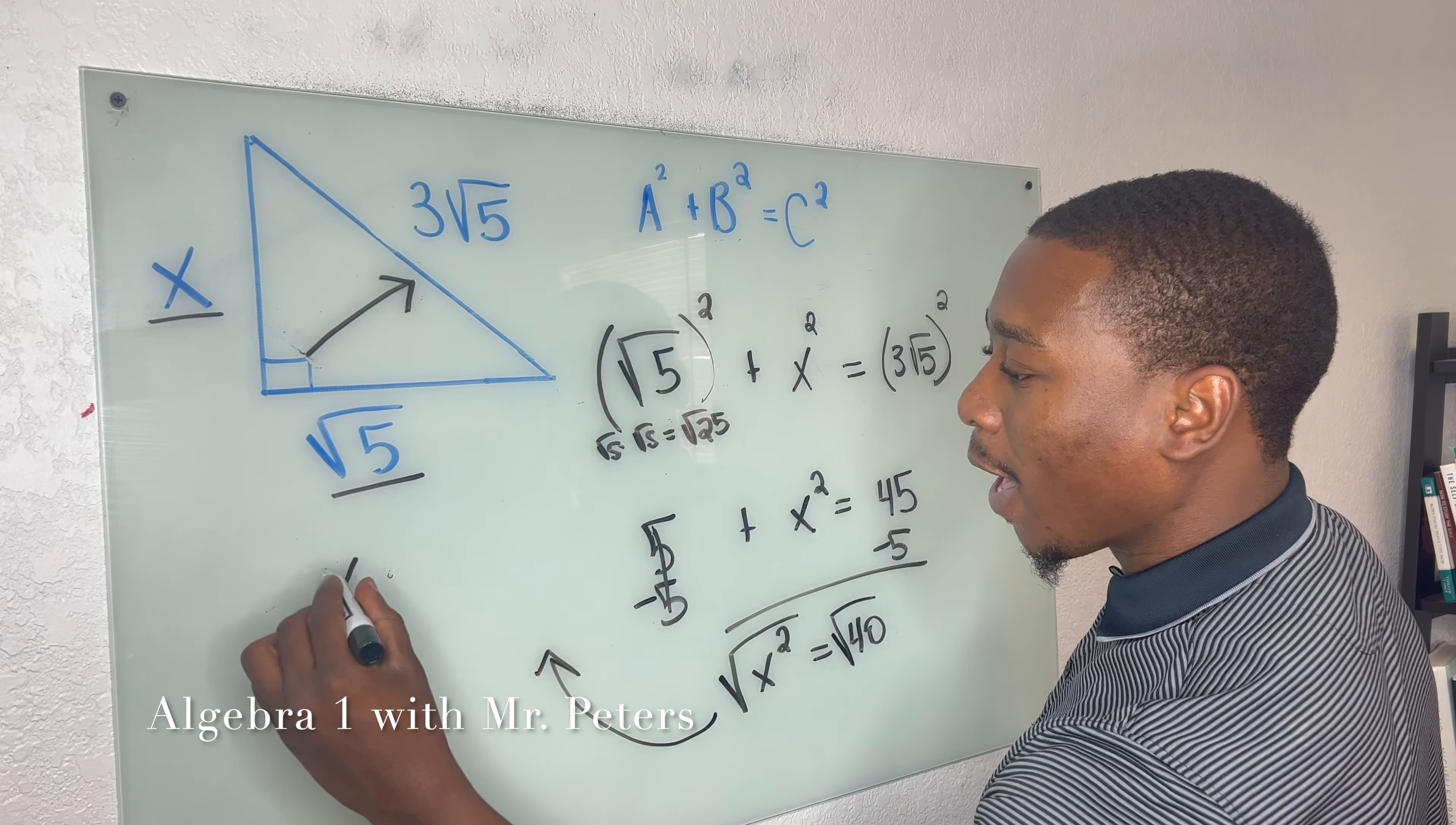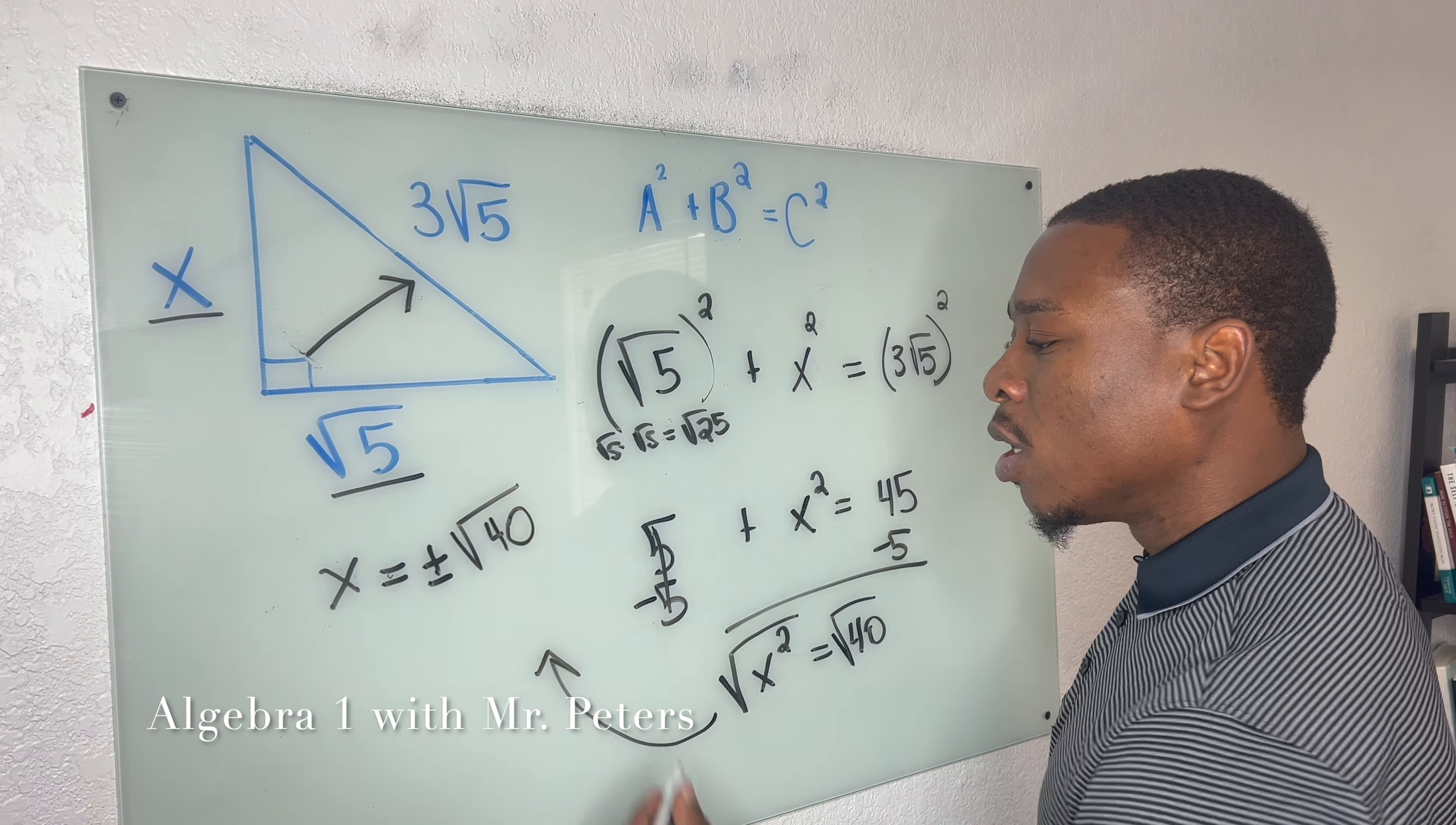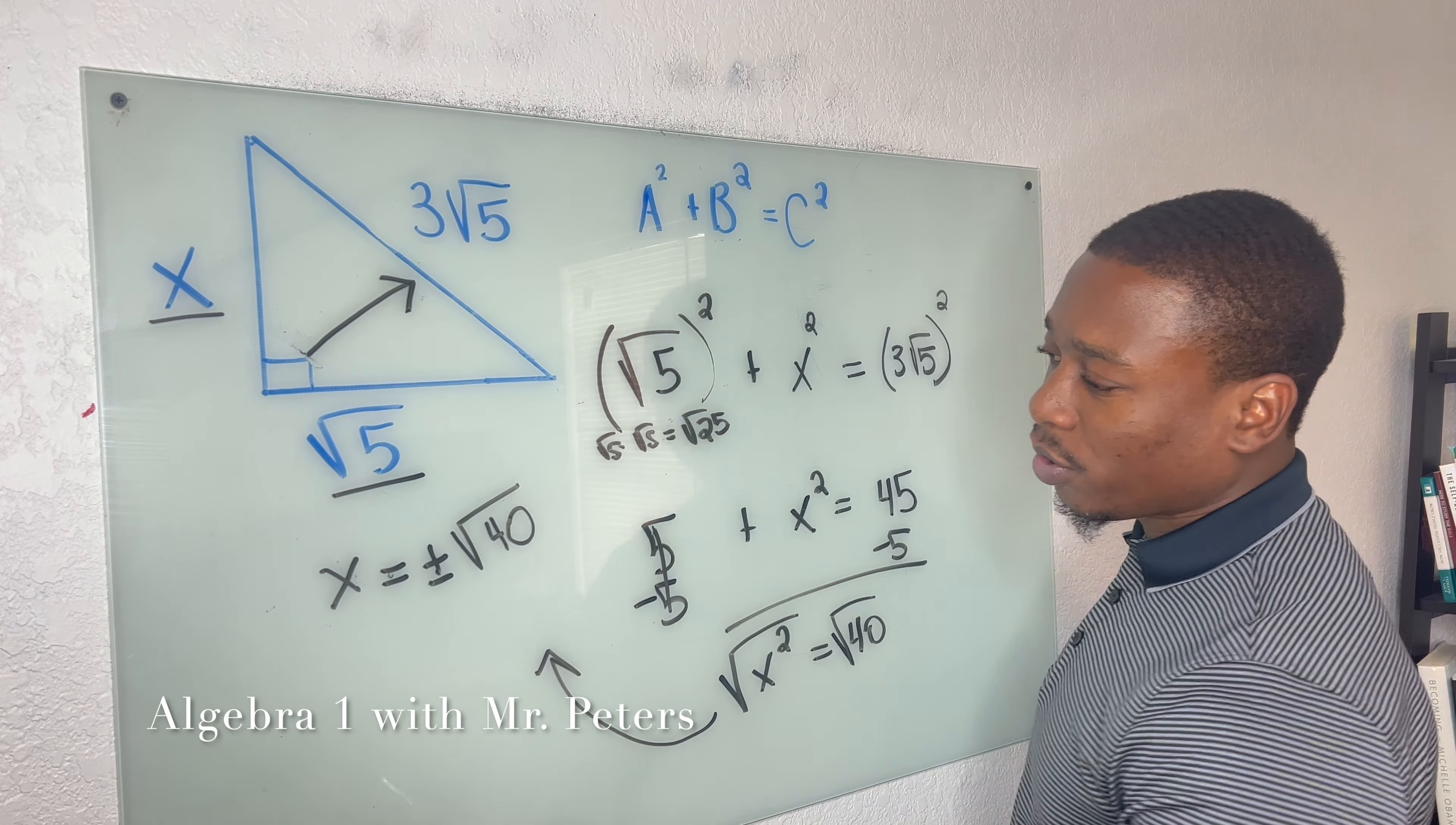We are now left with x is equal to plus or minus the square root of 40. Just remember that if we square a negative, it will turn positive. So that's why we have two answers.